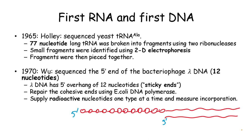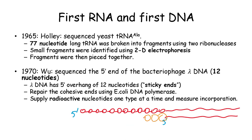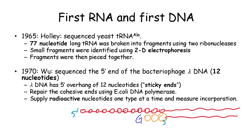In 1970, Wu sequenced the 5' end of the bacteriophage lambda DNA. What is special about the bacteriophage lambda DNA is that it has a 5' overhang of 12 nucleotides. Wu used the E. coli DNA polymerase enzyme to repair this overhang one nucleotide at a time. In each step, he tried each of the four nucleotides one by one to find out which one would be incorporated. Because only one of the four nucleotides will match the complementary strand and get incorporated, he effectively identified which nucleotide was present on the complementary strand. Repeating this at each position, he was able to identify what each of the 12 nucleotides were.